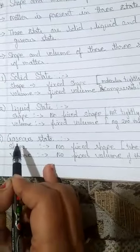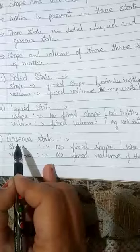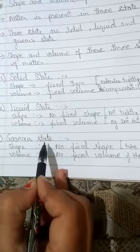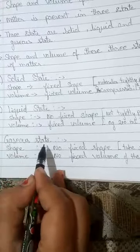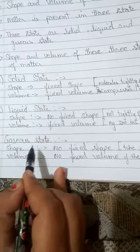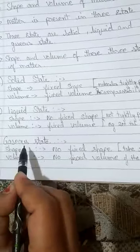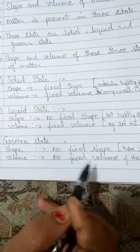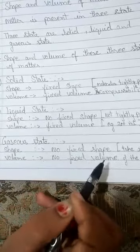The last and third state of matter is gaseous state. In gaseous state, there is large intermolecular space between the molecules. Gases take the shape of the container when we put any gas in a container.